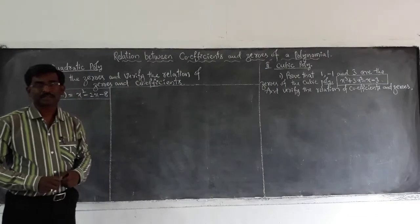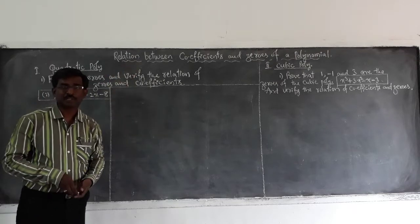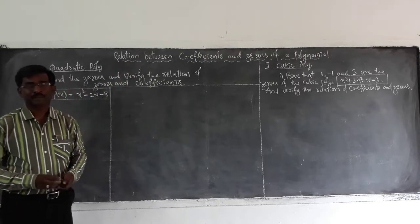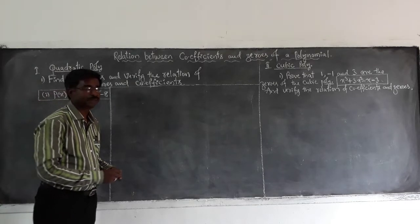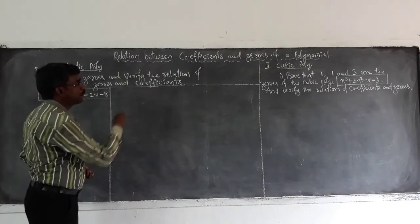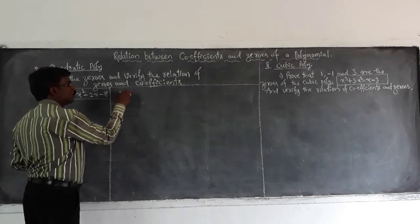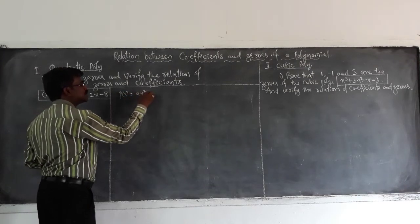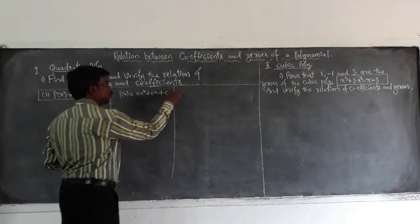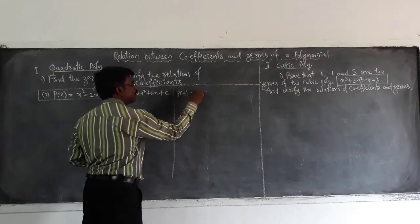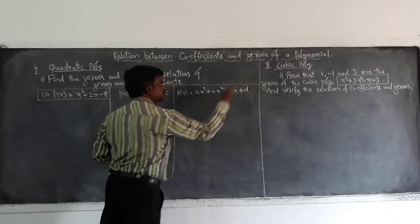In polynomials here is an important concept called relation between the coefficients and zeros of a polynomial. Let us see about such a relation in between these coefficients and zeros respective to a quadratic polynomial ax square plus bx plus c and a cubic polynomial p of x equal to ax cube plus bx square plus cx plus d.